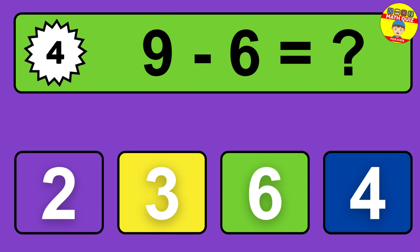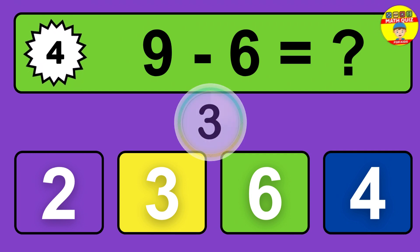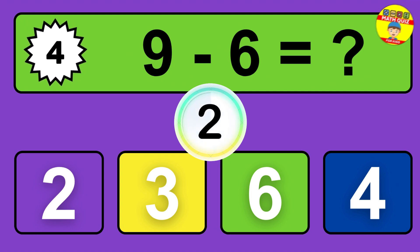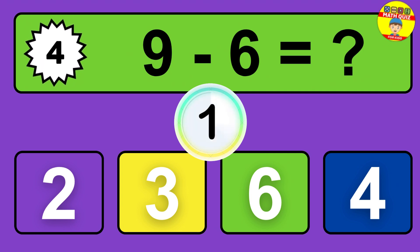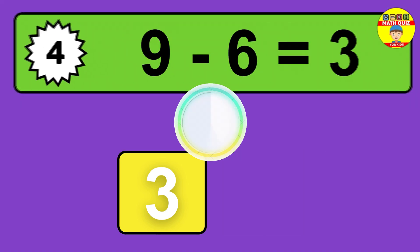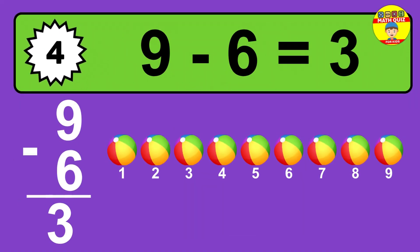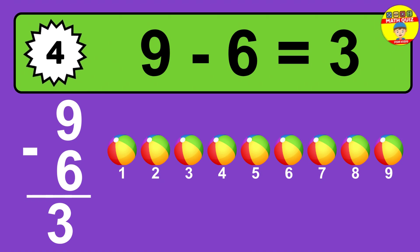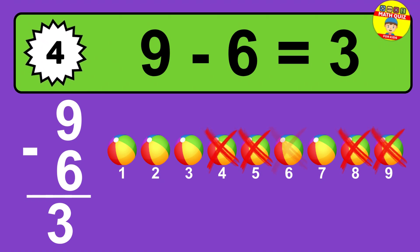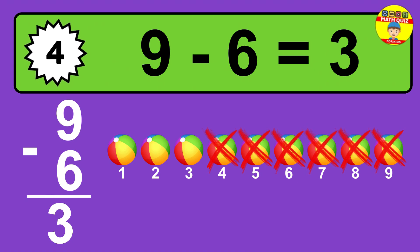Question four: nine minus four equals what? So the answer is nine minus four is five. Let's count it — one, two, three, four, five.